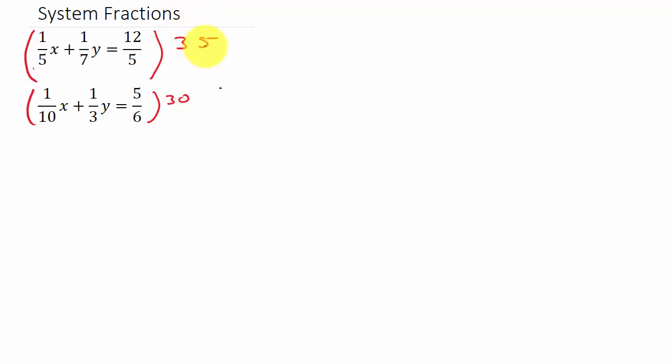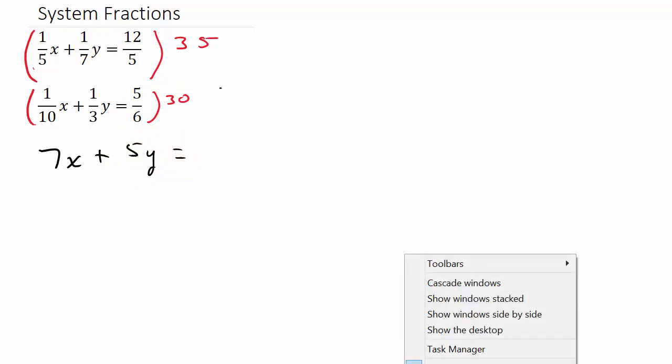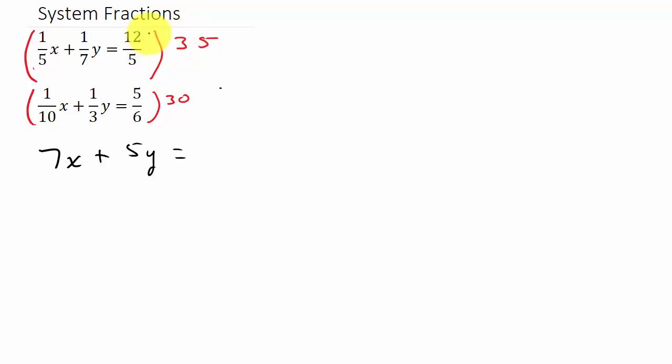So let's multiply the 35 and what that's going to do is it's going to give us a new system of equations. So if we do the 35 times 1 fifth, well, 5 goes into 35 seven times. And so we'll be left with 7x plus. And then 7 goes into 35 five times. So 5 times 1 is 5y equals. And then 5 goes into 35 seven times. And 7 times 12 is 84.